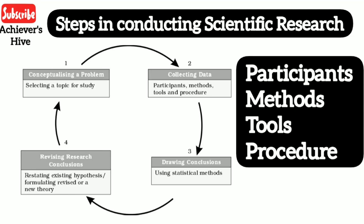The researcher decides who would be the participants, based on the nature of the study — students, adolescents, college students, teachers, or medical professionals. The second decision relates to the methods of data collection: observation methods, experimental methods, correlation methods, and so on. After that, we decide the appropriate tools — for example, a scheduled interview, observation, or questionnaire method. Finally, the researcher decides how to administer the tool.